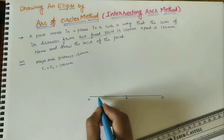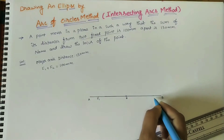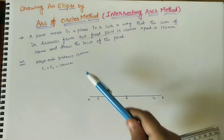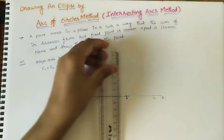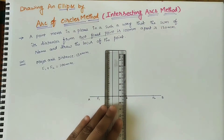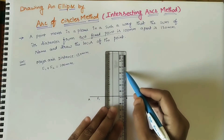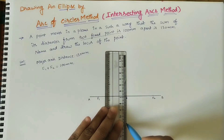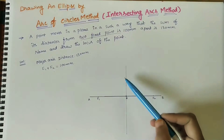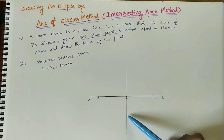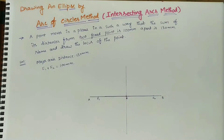So this is F1 and this point is F2. We have now marked the given data. At the middle point, draw a perpendicular line of some length — we don't know the minor axis length yet, so just draw a line of some length. After drawing this line we need to mark the minor axis length.